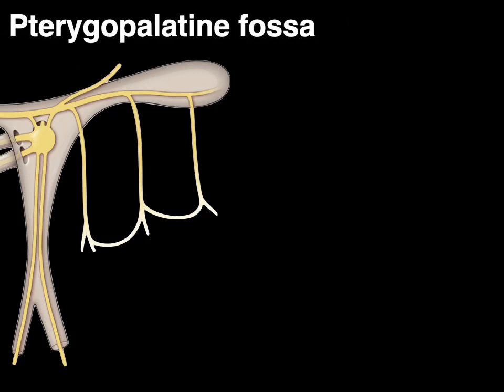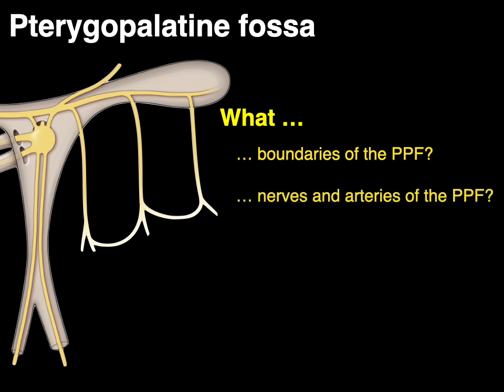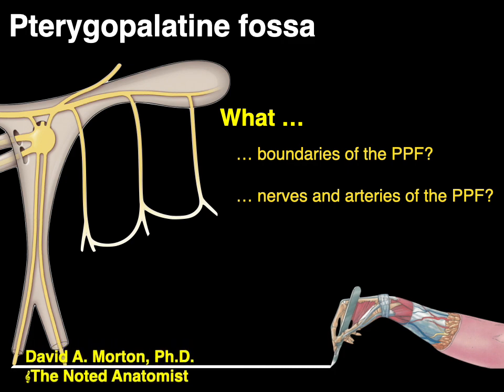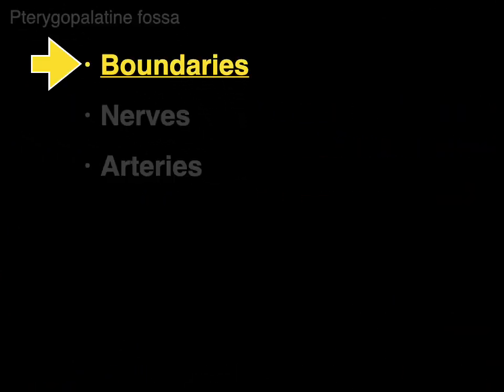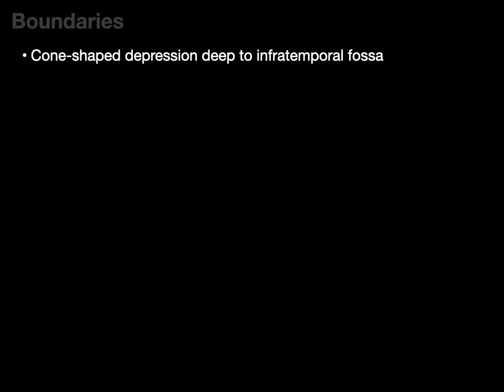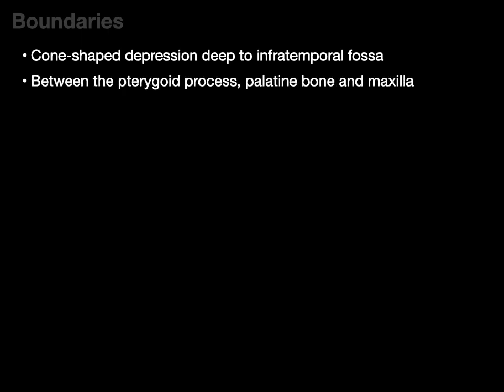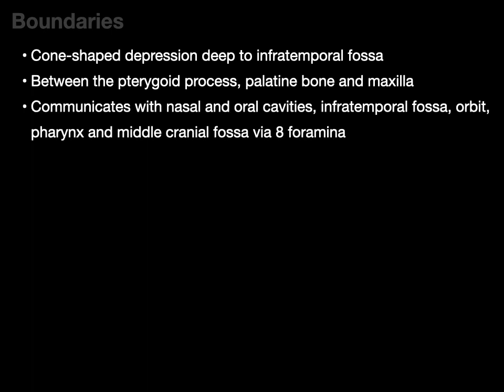Let's talk about the pterygopalatine fossa and answer the questions: what are the boundaries of the pterygopalatine fossa, and what are the nerves and arteries of the pterygopalatine fossa? My name is Dr. Morton and I'm the noted anatomist. To begin, let's talk about the boundaries. This fossa is a cone-shaped depression that's deep or medial to the infratemporal fossa. It's between the pterygoid process of the sphenoid bone and the palatine bone and the maxilla. The pterygopalatine fossa communicates with the nasal cavity and oral cavity, as well as the infratemporal fossa, the orbit, the pharynx, and middle cranial fossa via eight foramina.